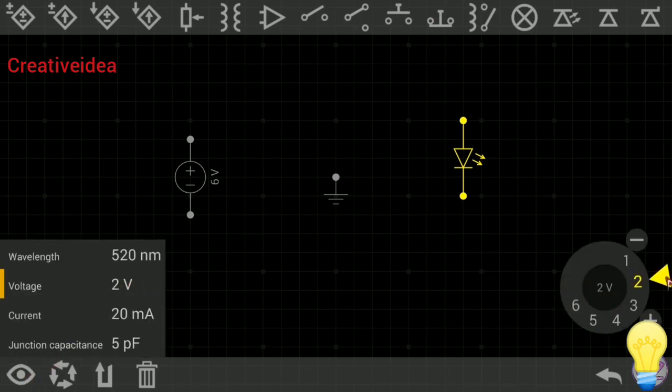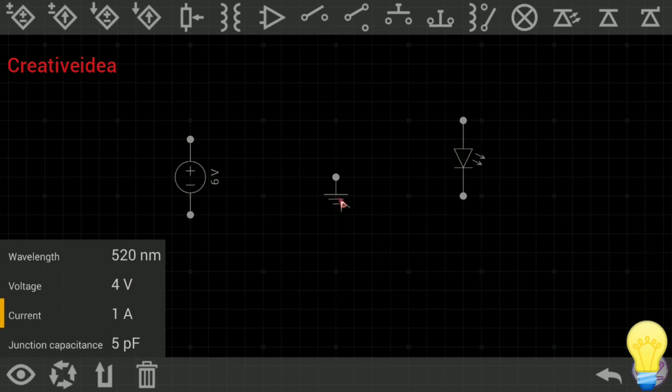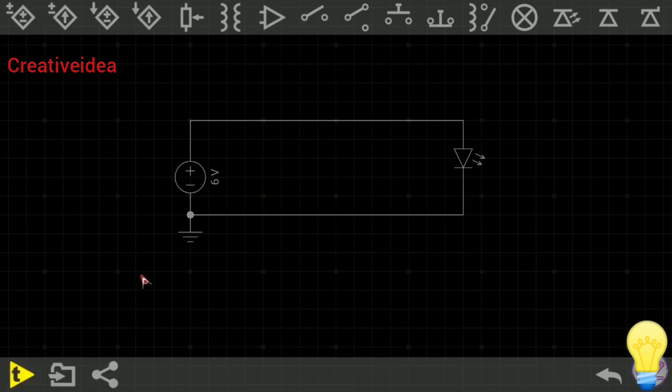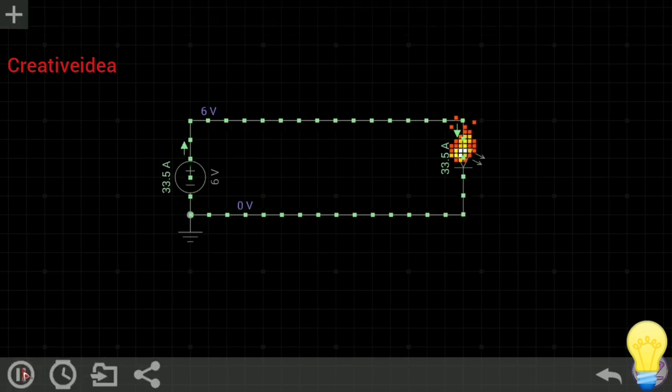This LED required 2V and 20mA. I'm changing it to 4V and 1A. Now, connecting this LED with 6V power source. And also, connect the ground. Oops. This LED just damaged. So, need to use resistance. Time to apply Ohm's law.